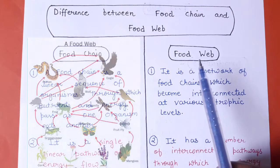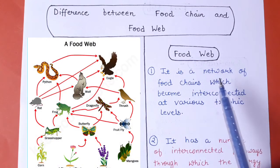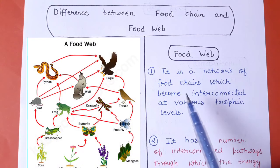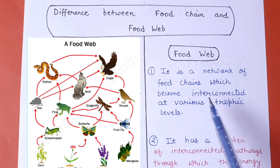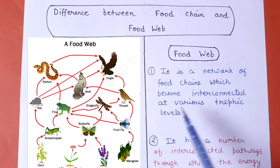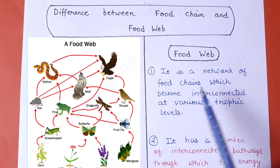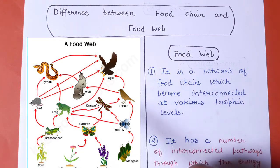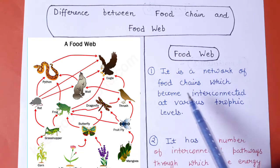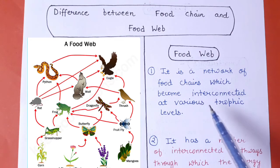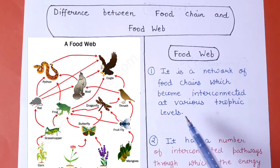A food web is a network of food chains which become interconnected at various trophic levels. So a food web is essentially a network of interconnected food chains.